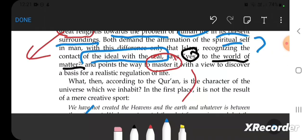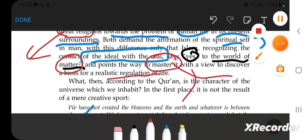So recognizing the contact of the ideal with the real and saying yes to the world of matter, to materialism, and pointing the way to master it and subjugate it to human will so we can regulate life, become the master of this life in this universe, which is the Hegelian project as well as the project of modern science, not the project of Islam and Christianity.